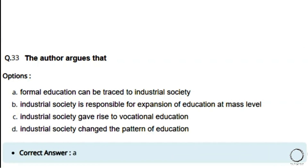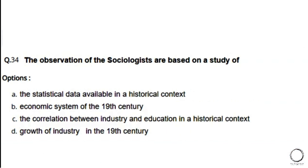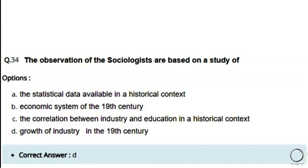Next: The observations of the sociologists are based on a study of — options: a) statistical data in a historical context, b) economic system of the 19th century, c) the correlation between industry and education in a historic context, d) growth of industry in the 19th century. The right answer is option D — growth of industry in the 19th century.